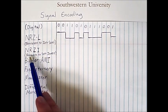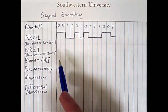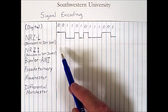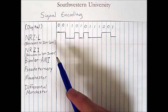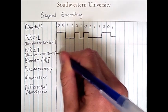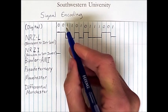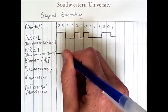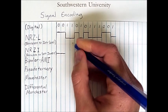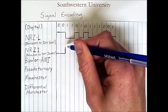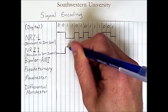The next encoding method, non-return to zero invert, is an example of a differential encoding method. With this method, it is not immediately obvious which bit we are encoding simply by looking at the signal, because each bit we encode depends on the preceding bits. We need some sort of starting point, so we'll assume we start at the lower voltage level. Every time we encounter a one, we will change the voltage level. Starting at the low voltage level with a zero, I stay at that level, but when I encounter a one the voltage level jumps — it is this change in voltage level that indicates a one is being encoded.